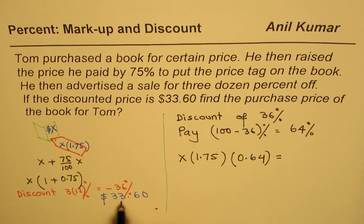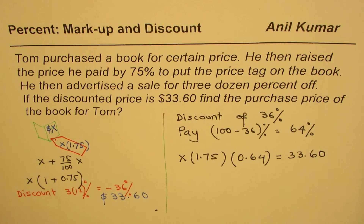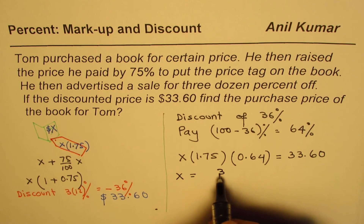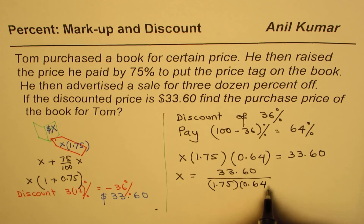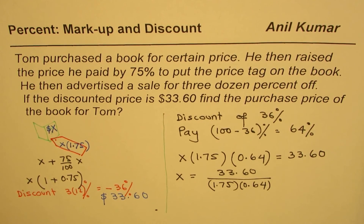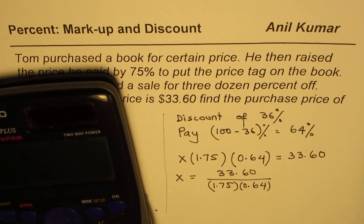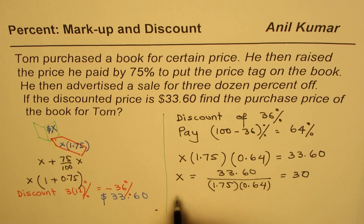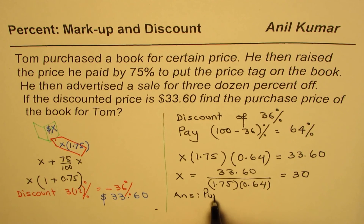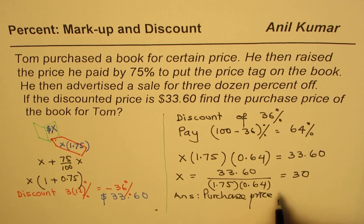So we get X times 1.75 times 0.64 equal to 33.60. That is how you can actually find the price. Rearranging, X equals 33.60 divided by 1.75 times 0.64 — you could also write this as 1 minus 0.36. So we have 33.6 divided by 1.75 times 0.64, which gives a price of $30. The purchase price for Tom is $30.